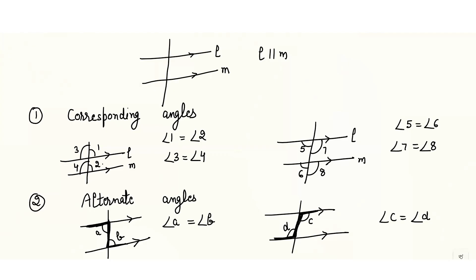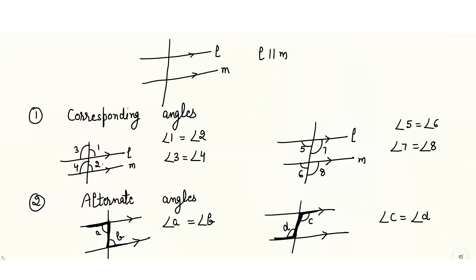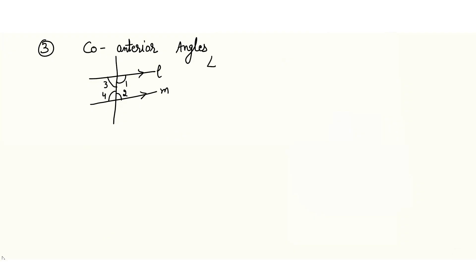Then we have another set of angles called co-interior angles. The co-interior angles between the parallel lines are angles 1 and 2 — they are co-interior angles. Then angles 3 and 4 — that pair is also a co-interior angle. So in parallel lines, the sum of co-interior angles should be equal to 180 degrees. That means angle 3 plus angle 4 also equals 180 degrees.